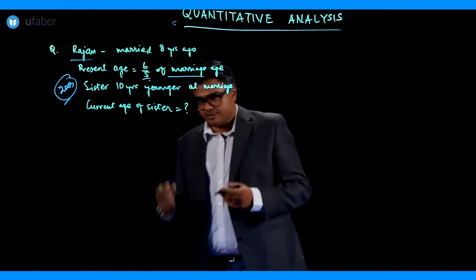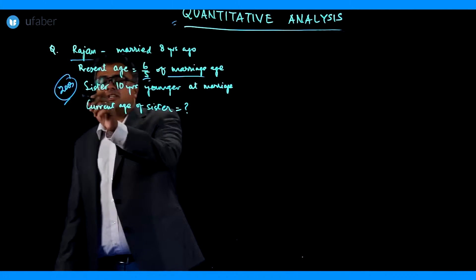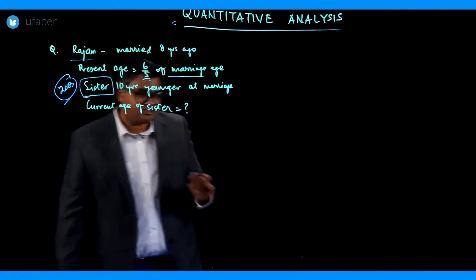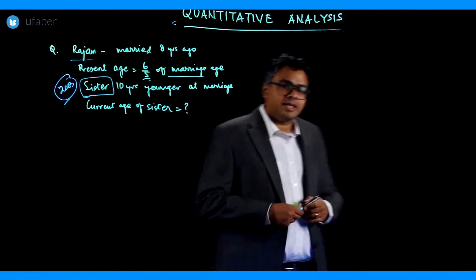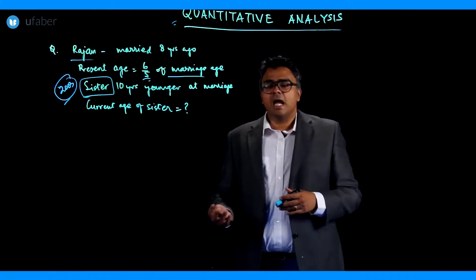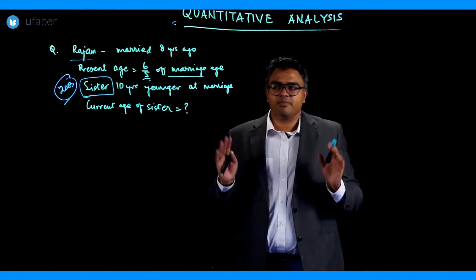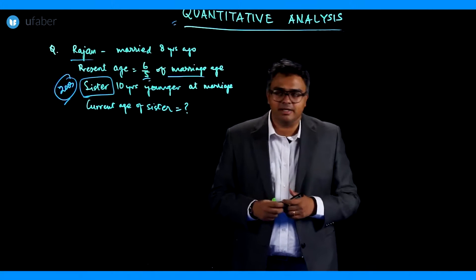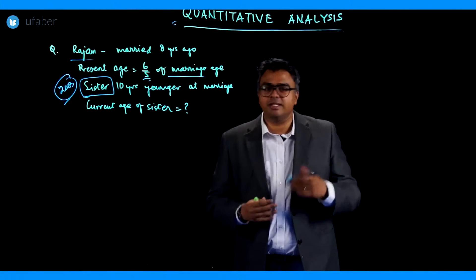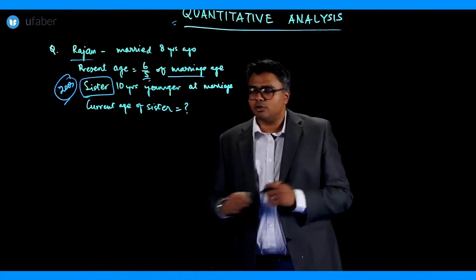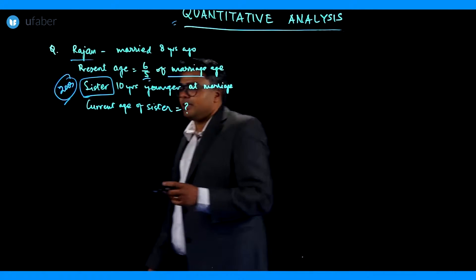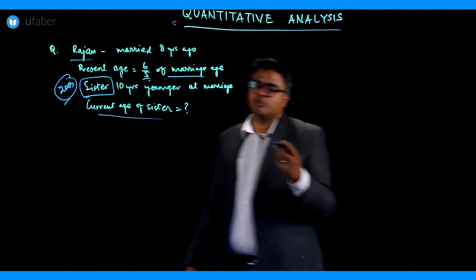Now he has a sister. The question is not about him, the question is about the sister. He has a sister who was 10 years younger to him at the time he got married. When Rajan was getting married, his sister was 10 years younger to him. The question asks you to tell the current age of the sister.